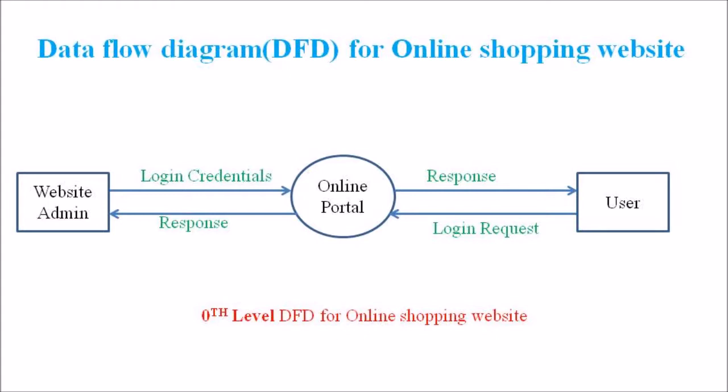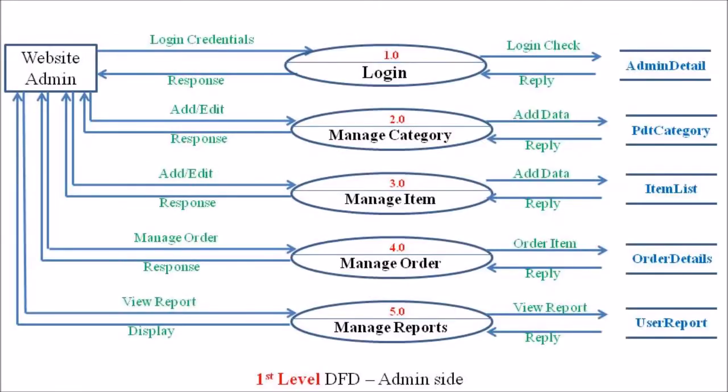We also discussed the level 1 DFD at the admin side of this process. In this level 1 DFD, we can see five independent processes: login, manage category, manage item, manage order, and manage report.